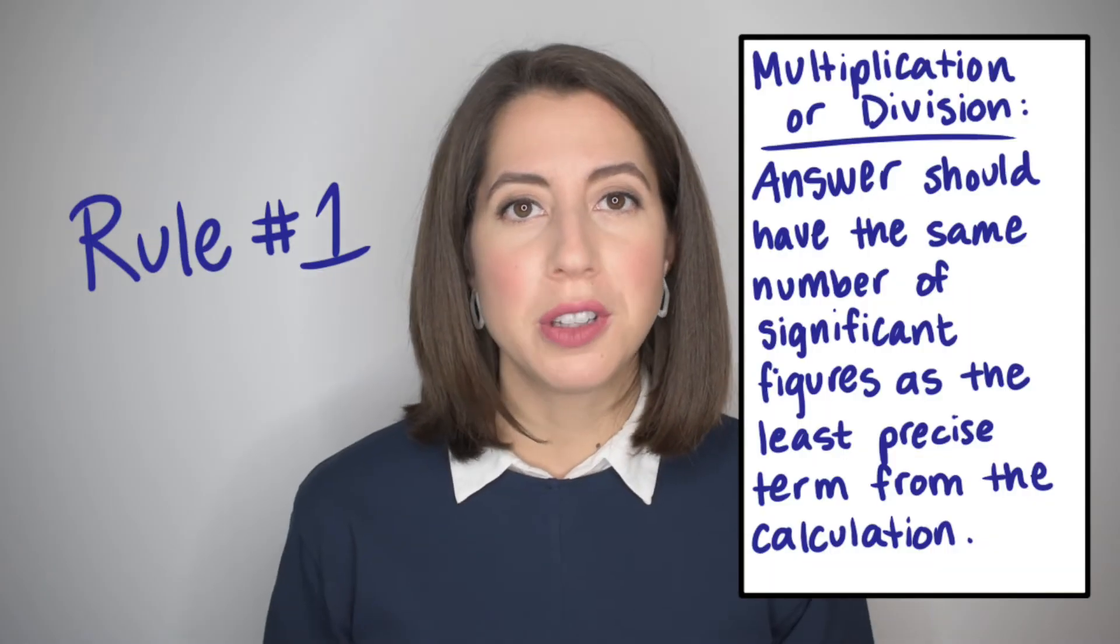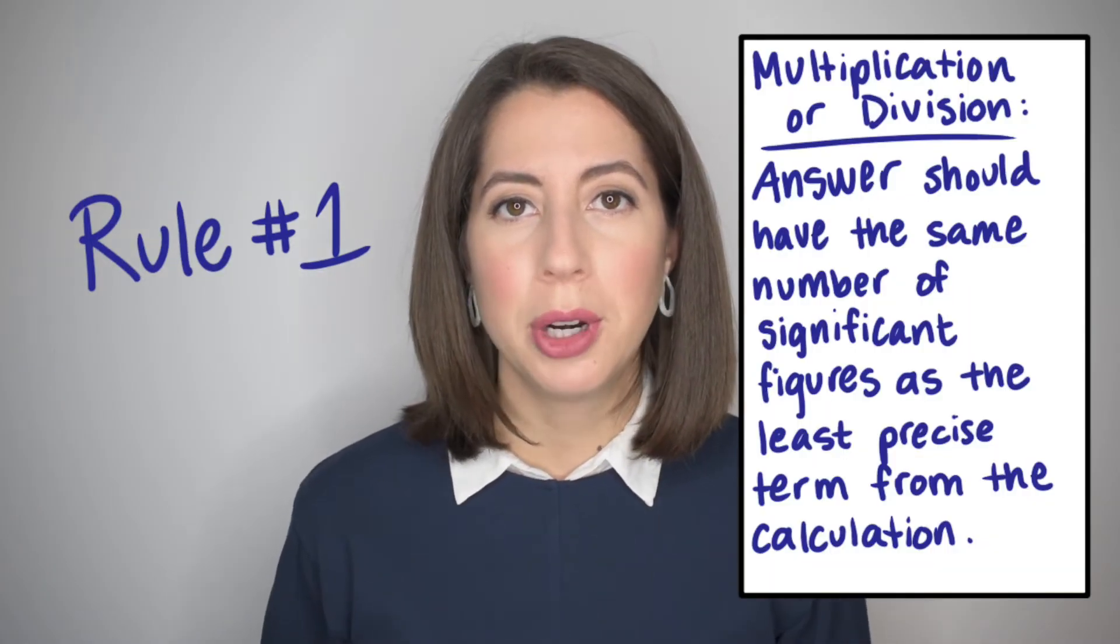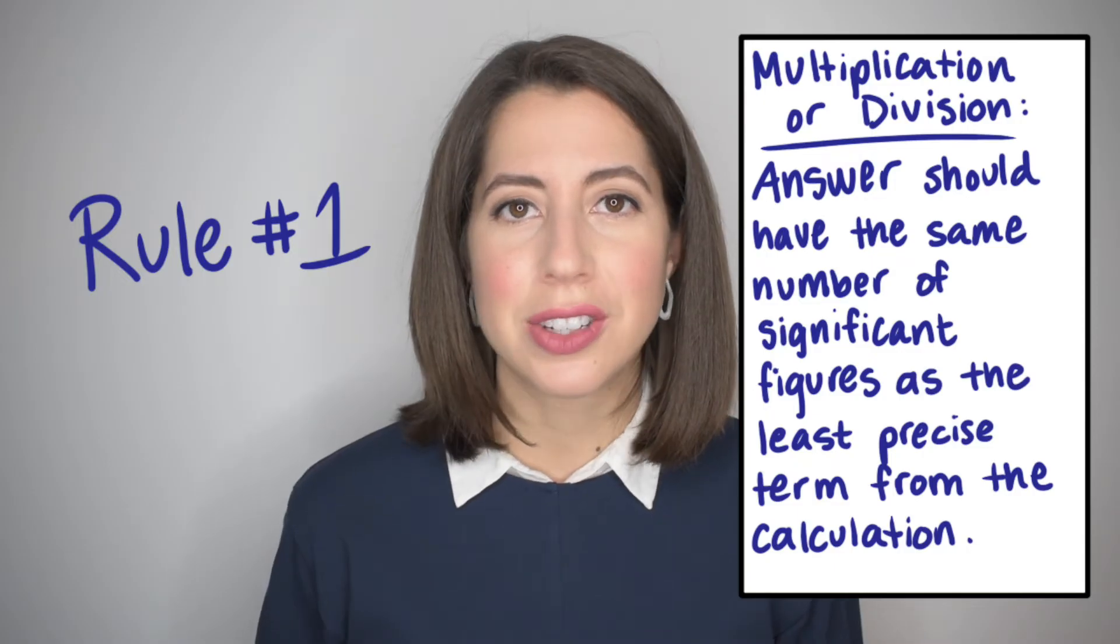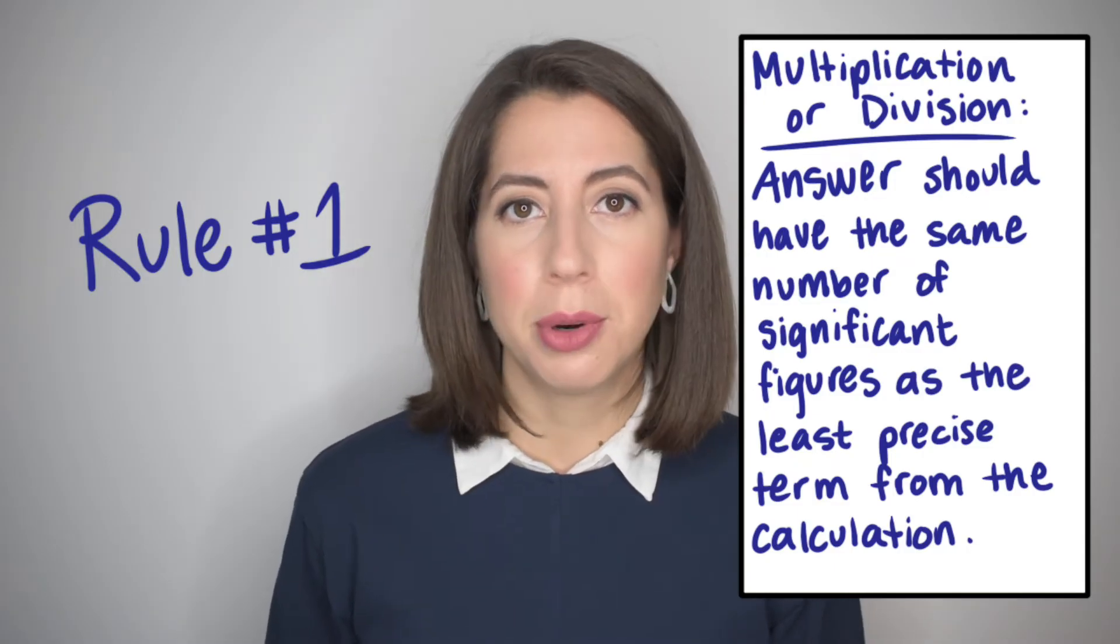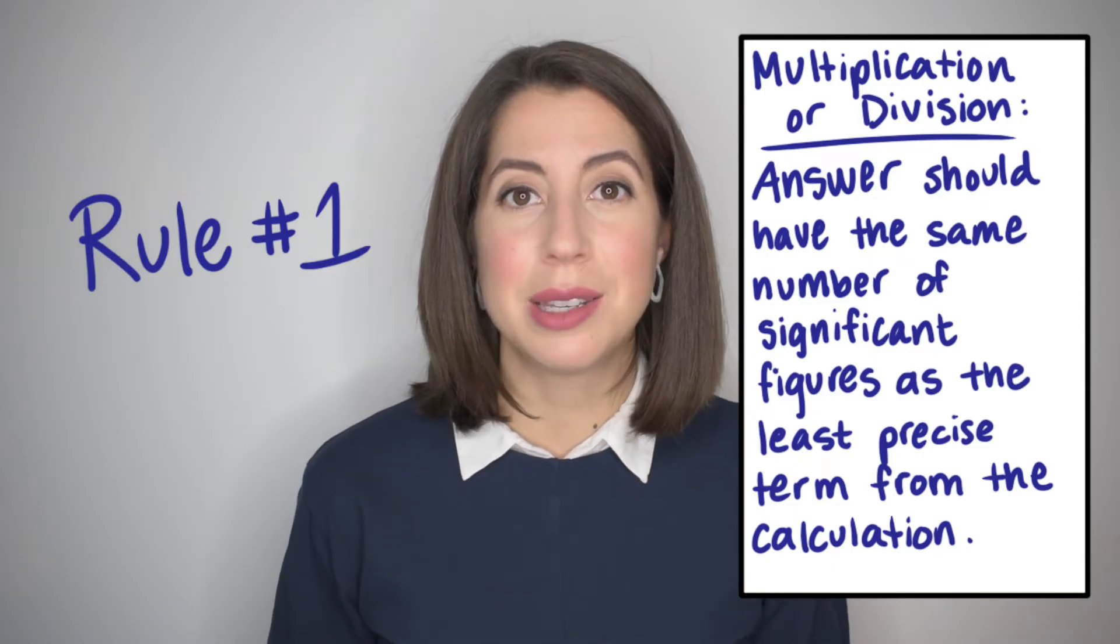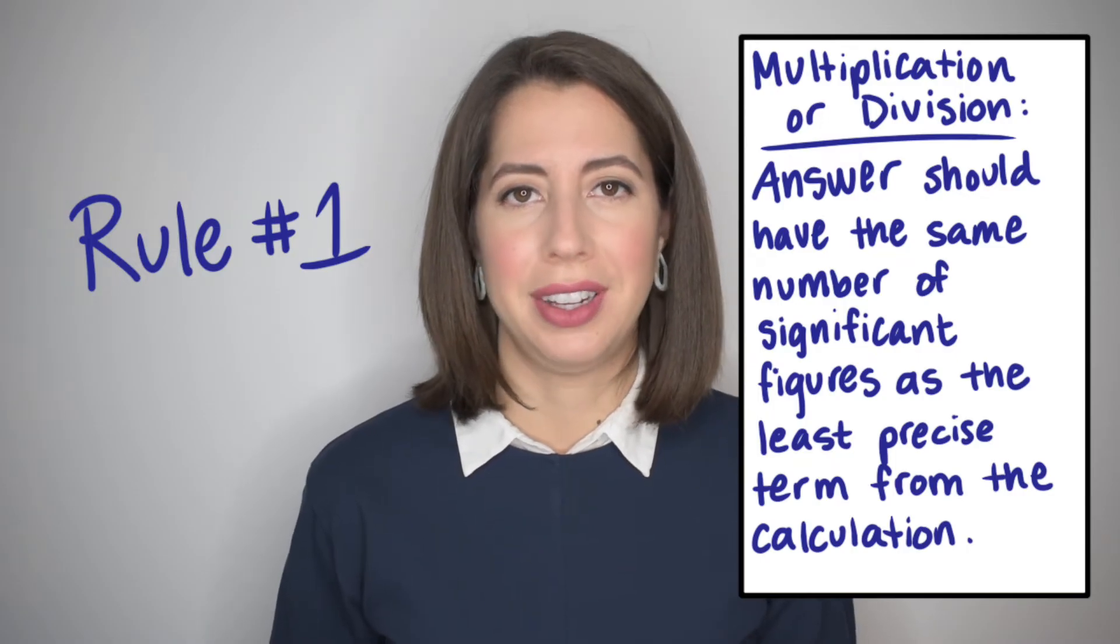Rule number one. When doing multiplication or division, the number of significant figures in your answer should be the same as the number of significant figures in the least precise term from the calculation.